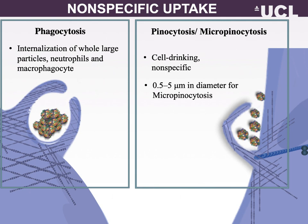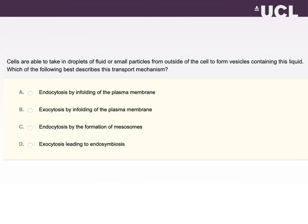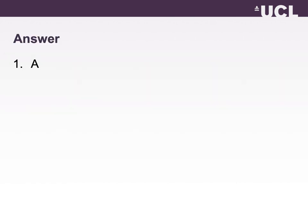Phagocytosis is a major mechanism used by the immune system to remove pathogens and cell debris. Let's check our knowledge about endocytosis. Cells are able to take in droplets of fluid or small particles from outside the cell to form vesicles containing this liquid. Which of the following best describes this transport mechanism? You can now check your answer.